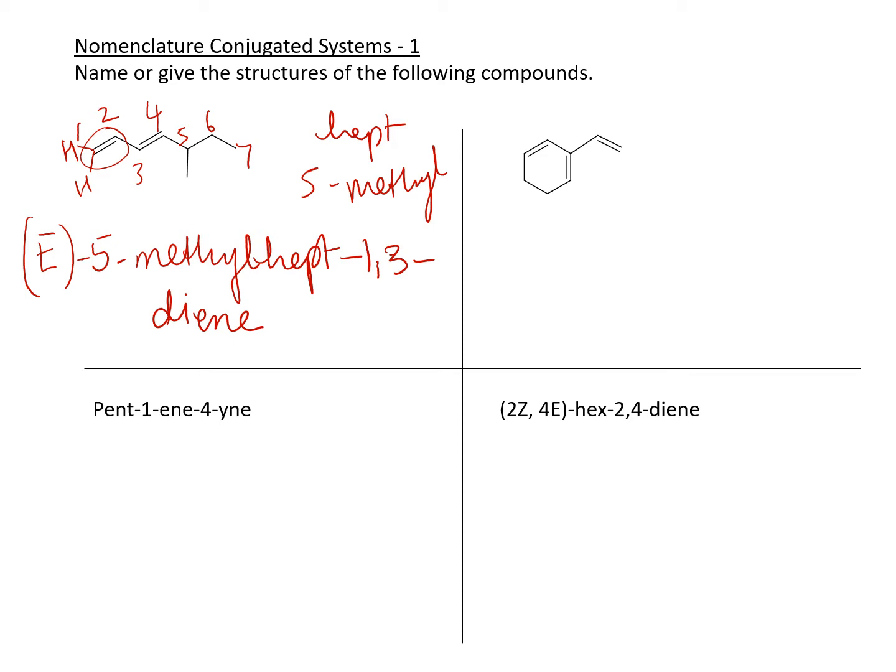So this is a cyclic compound and we start the numbering from the double bond. So one, two, three, four, five, six. This substituent right here, yes, you're right, it's actually a vinyl.